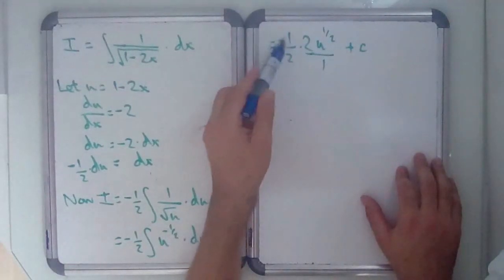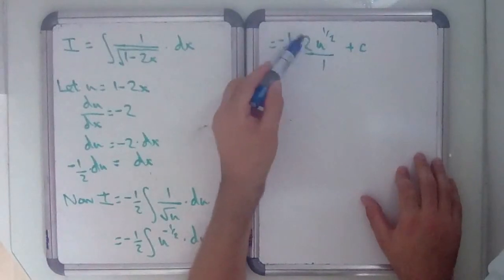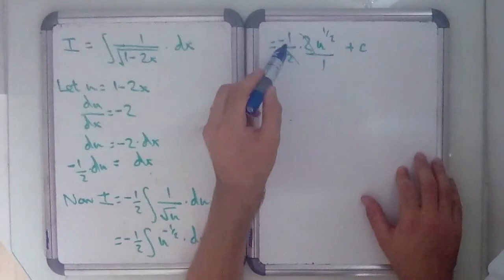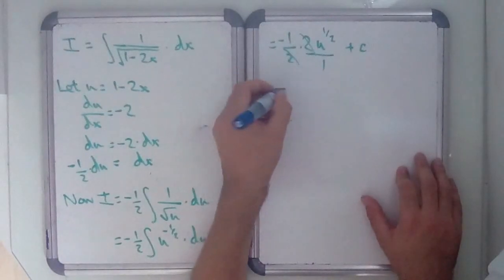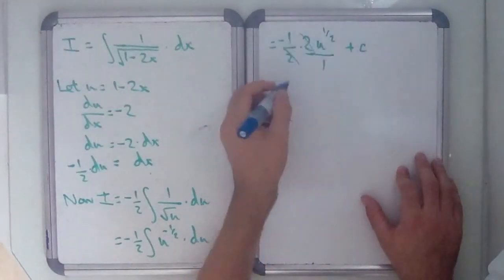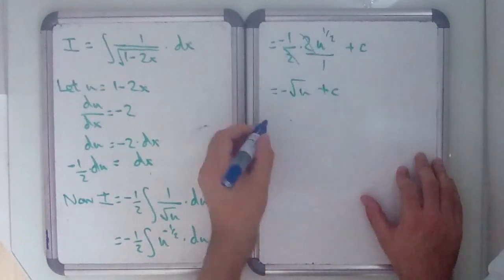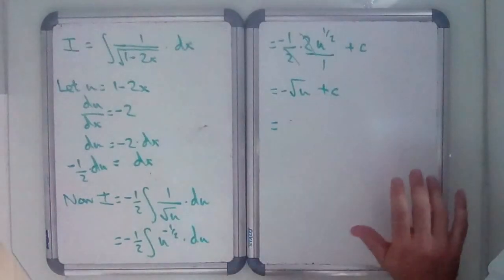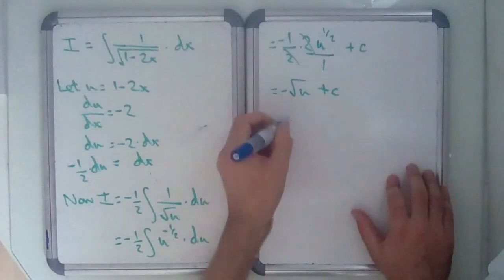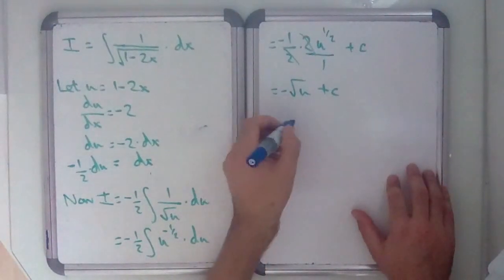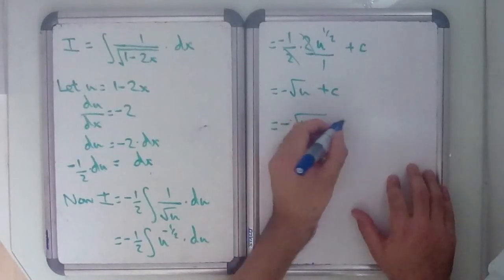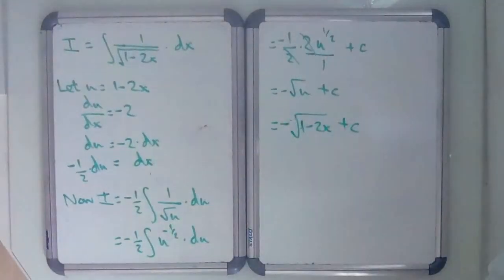So if we tidy that up a bit, well, these 2's are going to cancel off. The 2 minus 1's are just going to end up being one negative thing, so equals minus u to the half, so minus root u plus c. So equals, if we want the thing in terms of x, which we definitely do, minus root 1 minus 2x plus c. That is our result.